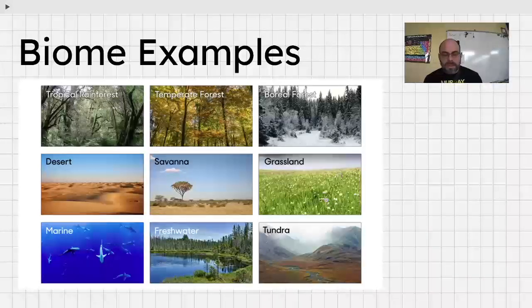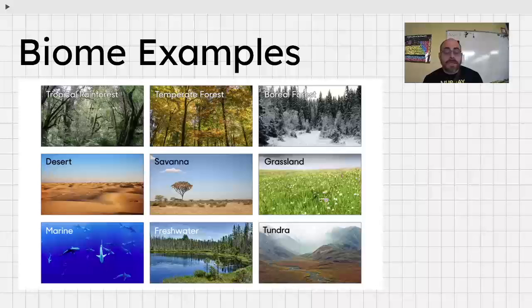Taiga, or boreal forest, and you see in this picture, lots of conifers, colder temperatures. Nutrients are poor in the soil as well just because of the fact that all the nutrients are in the trees. Again.